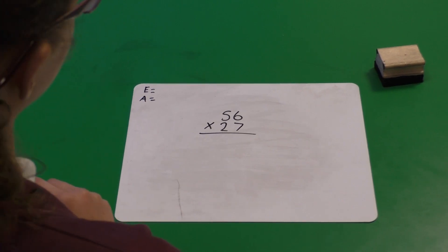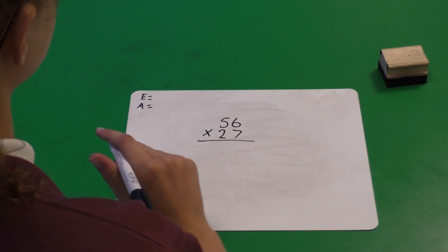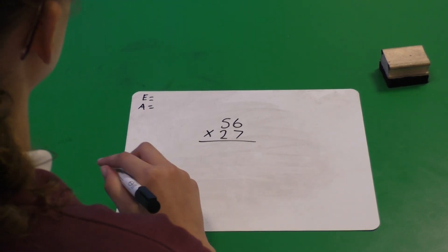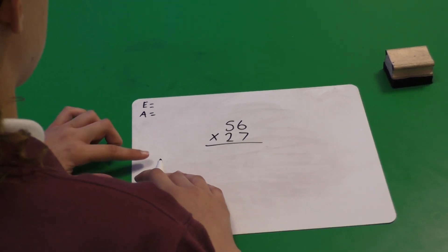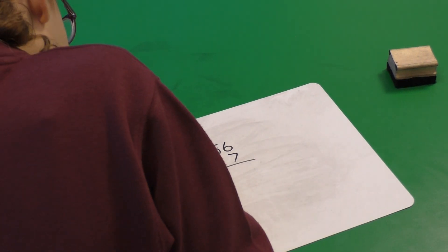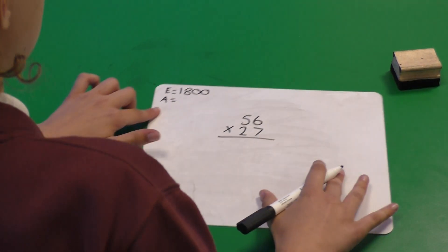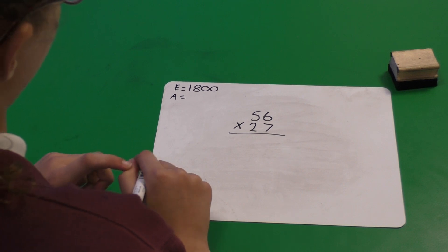We round the two numbers to the nearest 10. So 56 to the nearest 10 would be 60 and 27, 30. So now I have 60 multiplied by 30, which is 1,800. So our estimate is 1,800 and our answer should be something close to that.